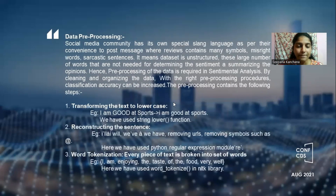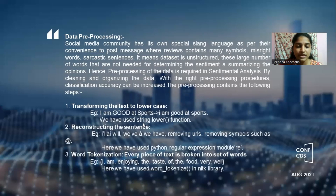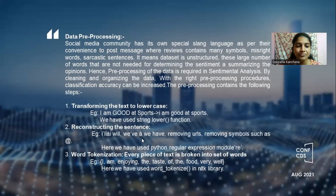Data preprocessing is cleaning and organizing the data to get useful data by removing all unnecessary data. It involves six steps. First, transforming all data into lowercase — data may have uppercase and lowercase, and we convert all text to lowercase only. Second, reconstructing the sentence: there are shortcuts used in English, so we convert all these shortcuts to a meaningful, understandable form that the machine can process.